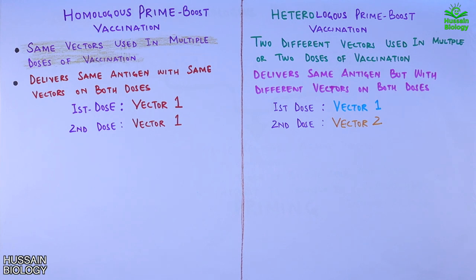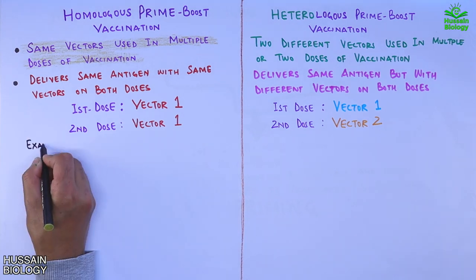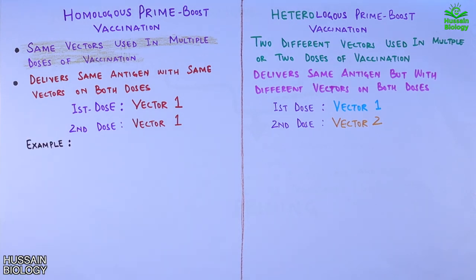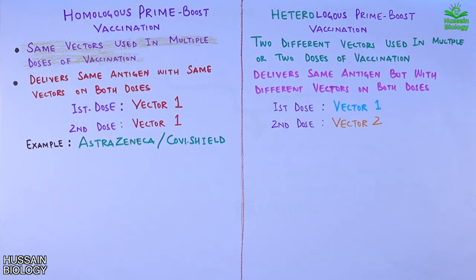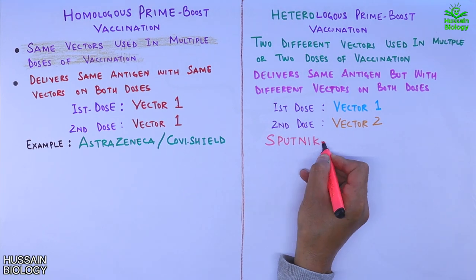Looking at current global vaccine examples: for homologous prime-boost we have the AstraZeneca or Covishield vaccine, or any other inactivated virus type vaccines. For heterologous prime-boost vaccines, the only example is the Sputnik V vaccine.